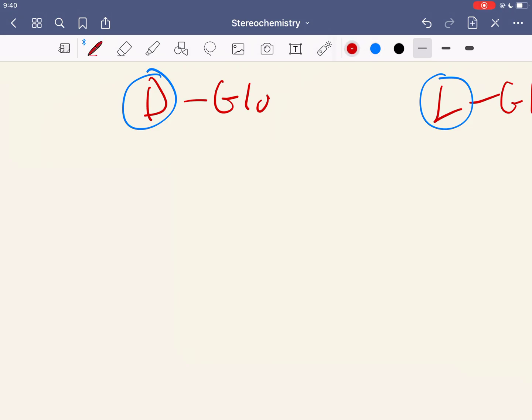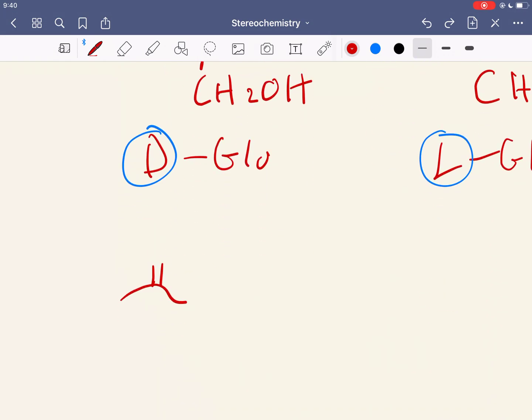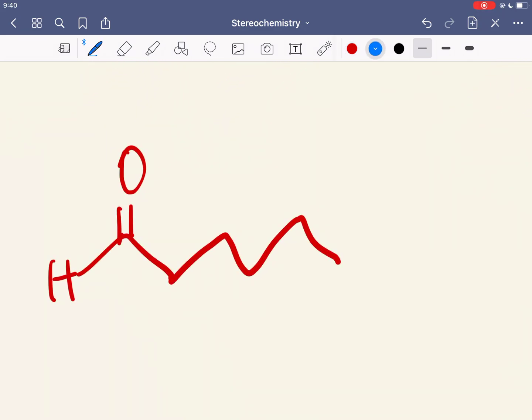And finally, just to go over what alpha and beta carbons are, if you have a carbonyl like this. I have a carbonyl like this. This carbonyl carbon, you can just call it ipso, or you can call it the carbonyl carbon. One removed is alpha, and then you have beta, and it just keeps going on and on.